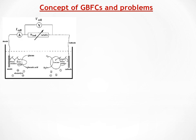To construct a glucose biofuel cell, we need to deposit an enzyme such as glucose oxidase at the bioanode with a redox mediator, and another enzyme such as laccase with another redox mediator at the biocathode. So when these two electrodes are connected together and put in a glucose solution, glucose will be oxidized to gluconolactone and generates electrons, which will be transferred to the electrode via the redox mediator deposited at the bioanode, then transferred via the external circuit.